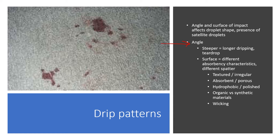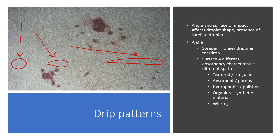When blood hits a surface at an angle, it takes a different shape. The steeper the angle, the longer and more drawn-out the teardrop shape of the drip — this indicates a steeper angle of approach. If the blood droplet looks shorter, the angle was more shallow. If it's nice and round, it probably fell straight down. The surface, as mentioned, lends itself to different absorbency characteristics and therefore different spatter.